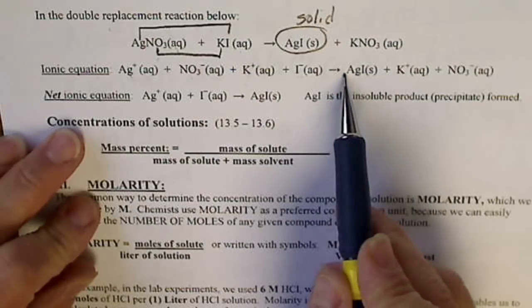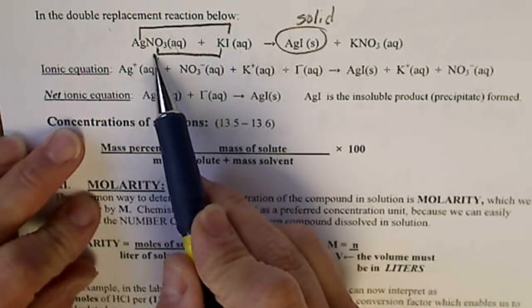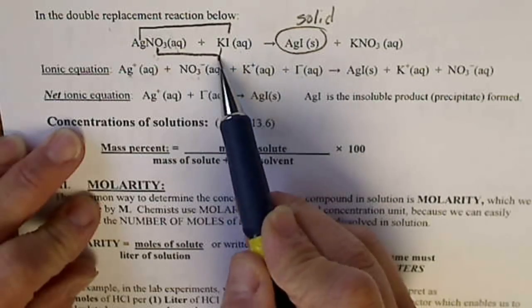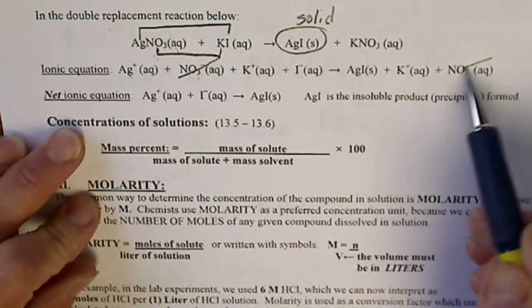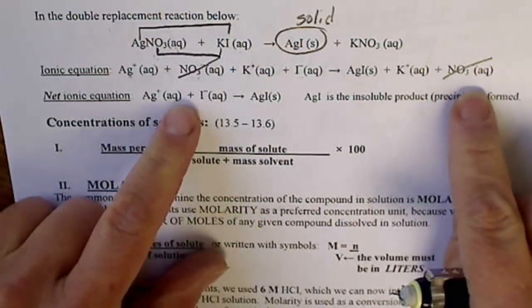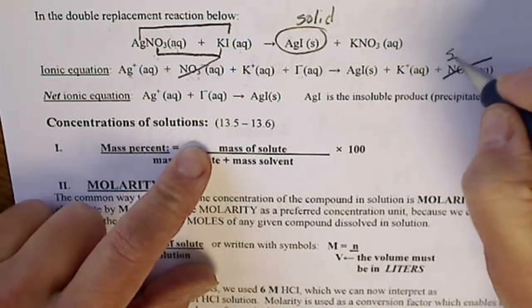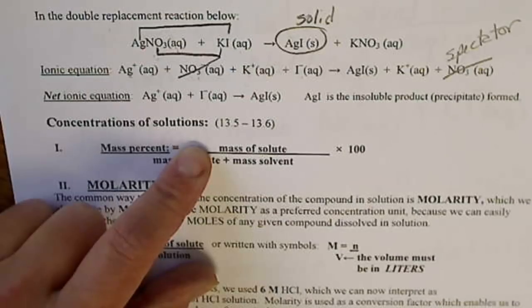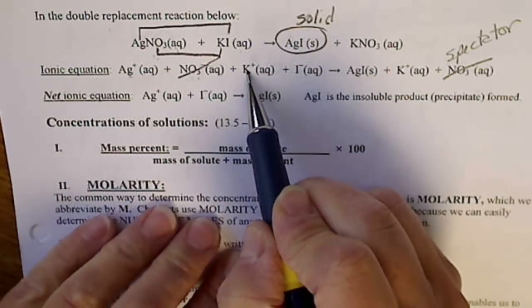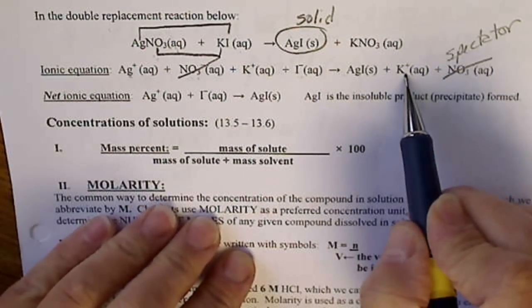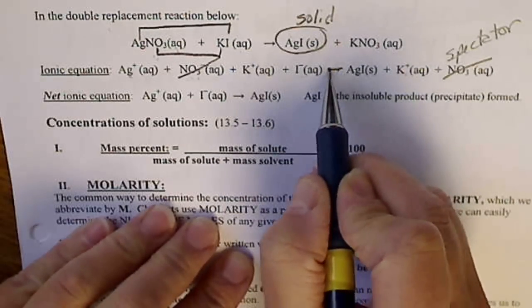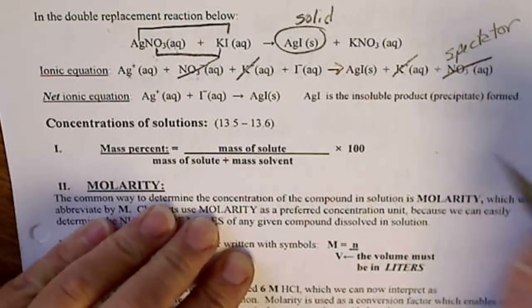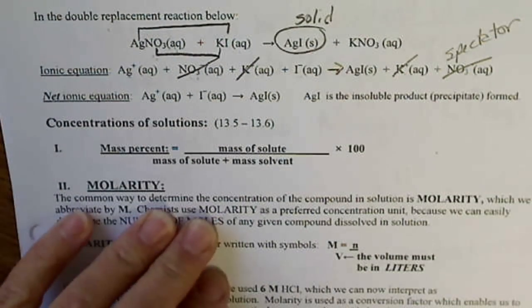If we look at this like a math equation, we have a silver ion here and a nitrate ion here, and the nitrate ion shows up on both sides of the equation. So nitrate is called the spectator ion, in other words, it doesn't do anything, it just floats around in water. Potassium is also on both sides of the equation, so the potassium ions also just float around in solution.